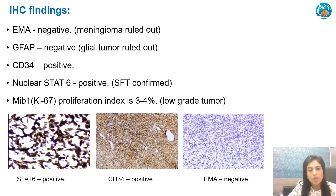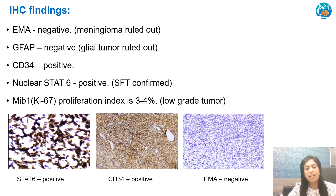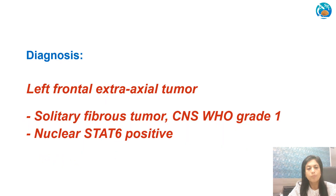We performed immunohistochemistry. EMA was found negative, which ruled out meningioma. GFAP was not expressed, ruling out a glial tumour. CD34 was positive in the cells. Nuclear STAT6 positivity was very strong, and that confirmed the diagnosis of solitary fibrous tumour. The MIB1 proliferation index was low at 3 to 4%.